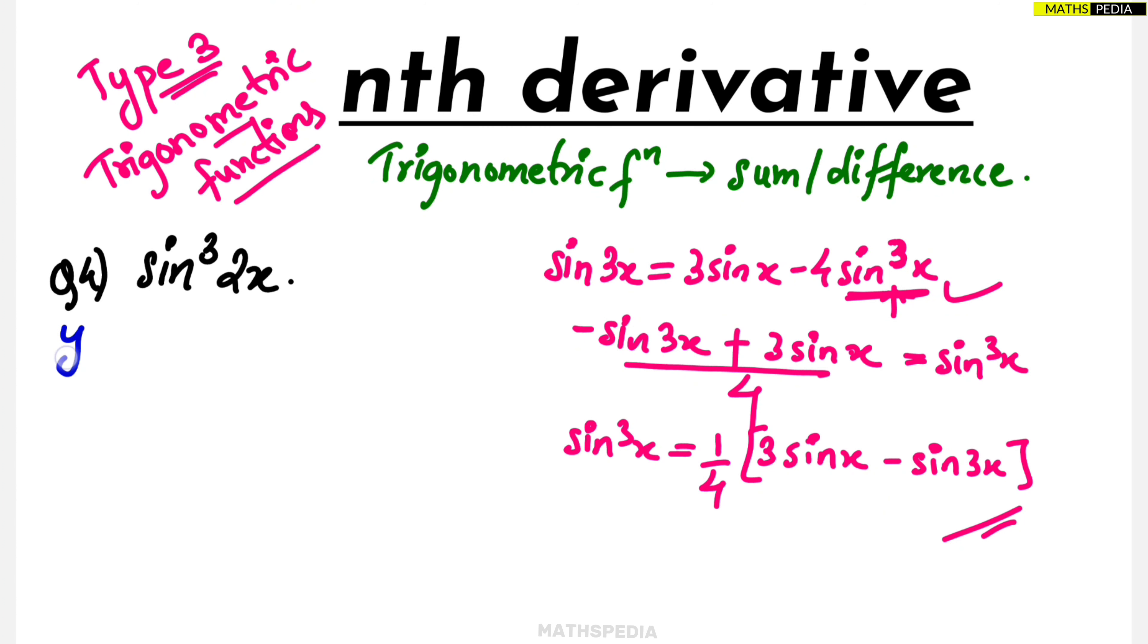Now this we'll apply over here. What will happen? Let us name this as y. Y function sine cube 3x. What is x? In place of x I am having 2x, so be careful while putting the values. So 1 by 4, 3 sine, it will be 2x minus 3 sine.